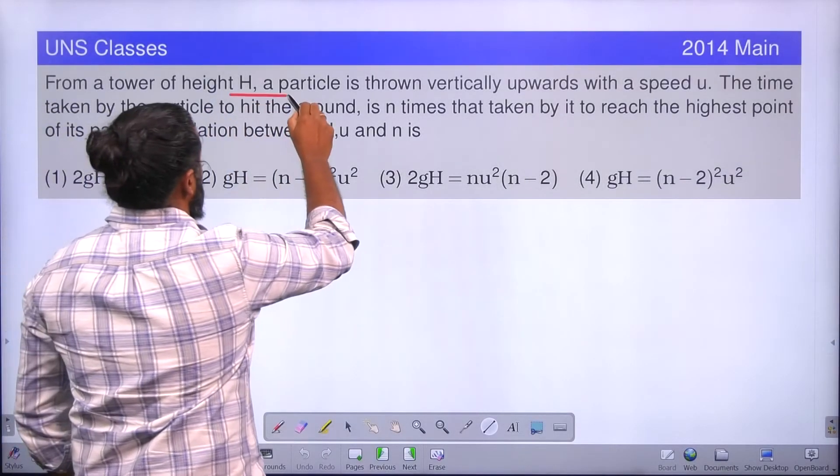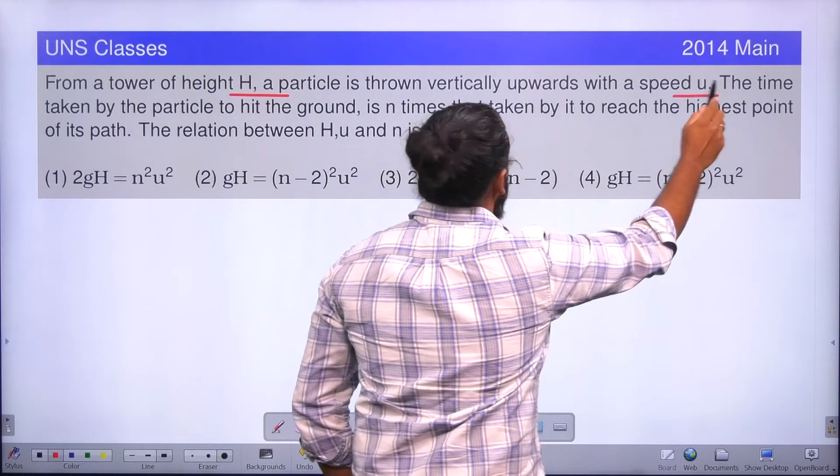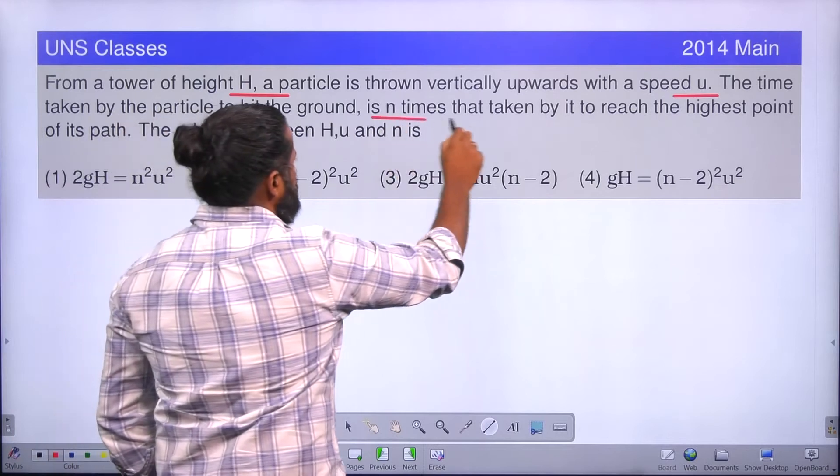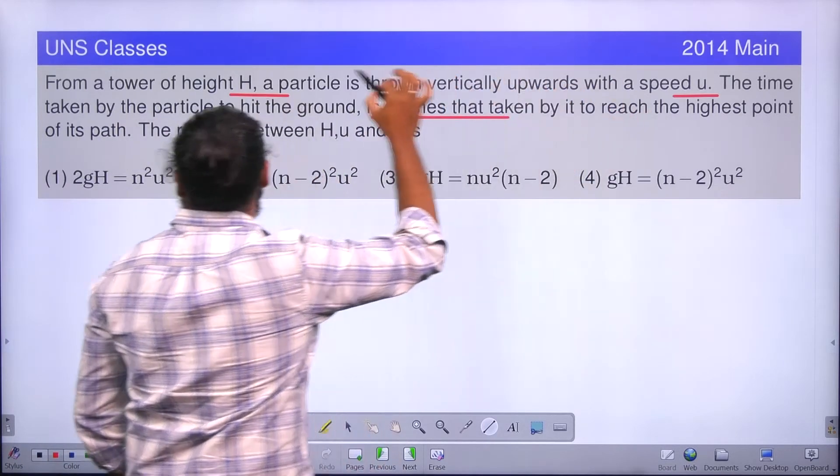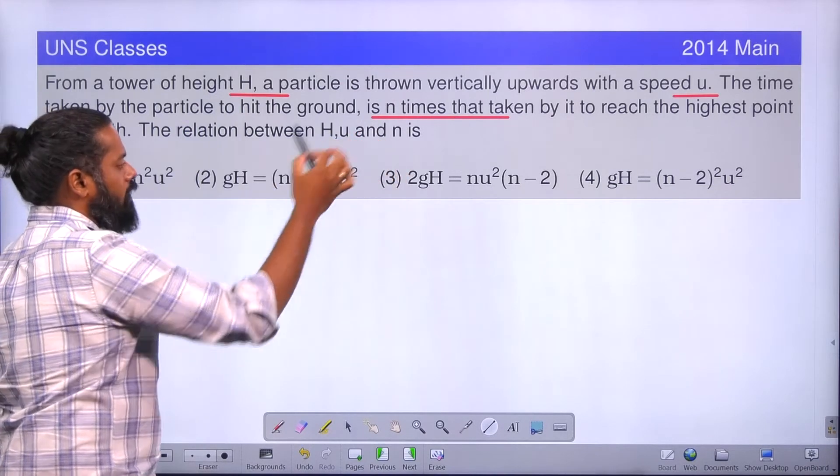From a tower of height H, a particle is thrown vertically upward with a speed U. The time taken by the particle to hit the ground is N times that of the time taken by it to reach the highest point of its path. The relation between H, U and N is?